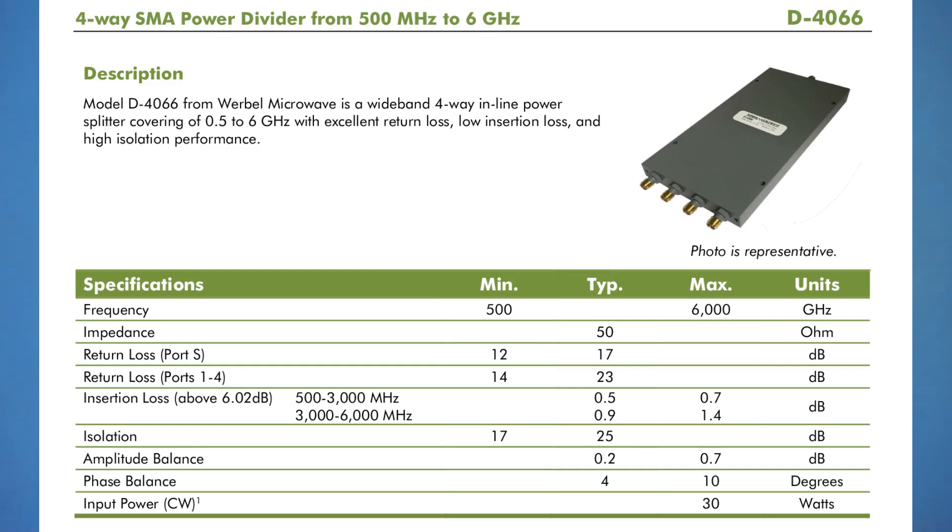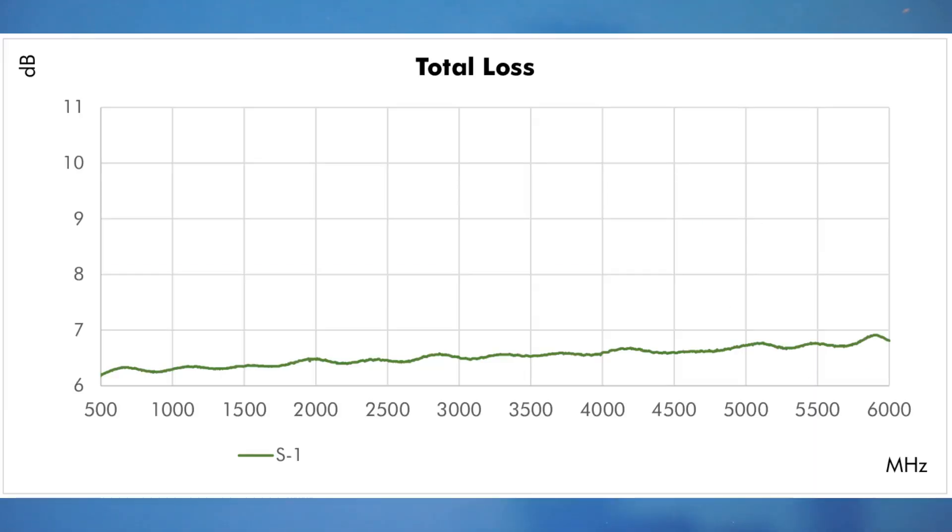Now I forgot to mention earlier, one of the drawbacks of a Wilkinson divider is that it is more difficult to achieve wider bandwidth. And to get a wider bandwidth usually it involves adding multiple cascading stages of the quarter wave transmission line structures and perhaps using some kind of taper line structures as well. So we'll have to open it up later to see what techniques are used in this particular device. And here you can see that the insertion loss is actually very minimal for this device.